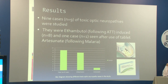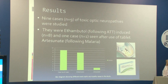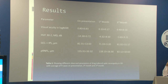Nine cases of toxic optic neuropathy were studied, of which eight were ethambutol-induced, related to anti-tuberculous treatment, and one case was anti-malarial artesunate-induced optic neuropathy.